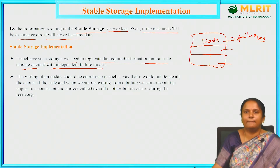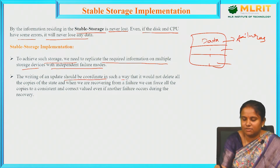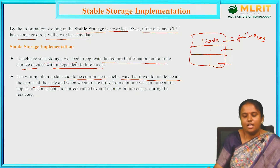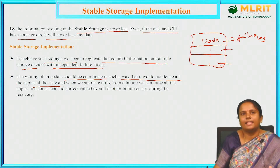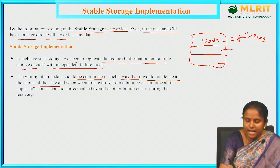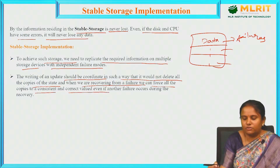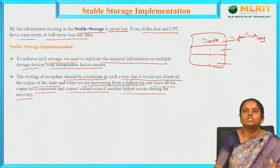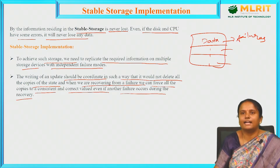Failures may occur, but the data is never lost. The writing of an update should be coordinated in such a way that it does not delete all copies of the state. Whatever you are writing as an update in the files will be coordinated with the saved files and copies are kept in a safe state. When recovering from a failure, we can force all copies to a consistent and correct value even if another failure occurs during recovery. The data will be safe — that is how stable storage works.